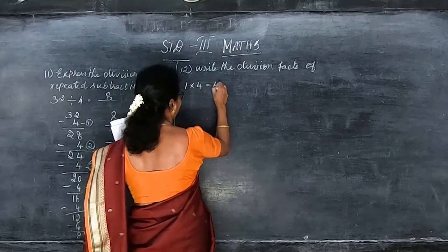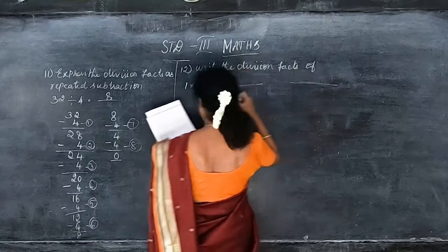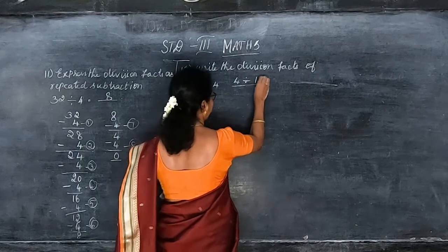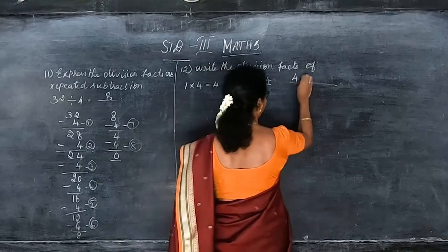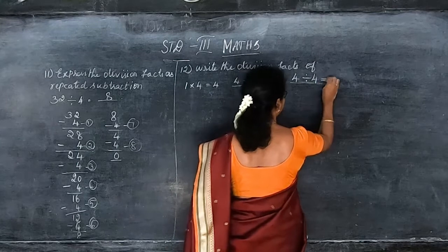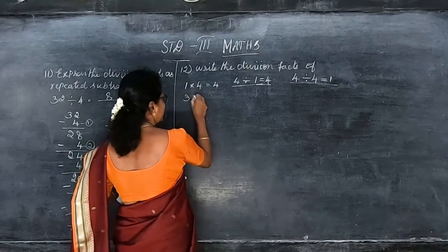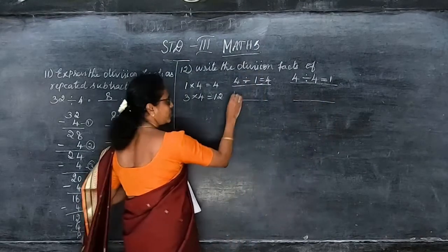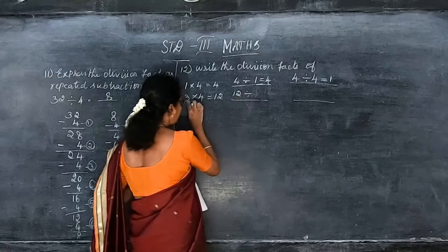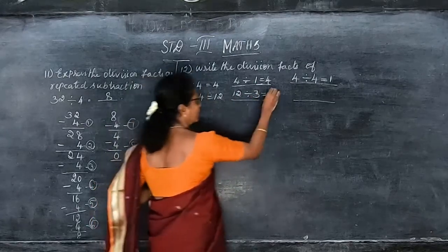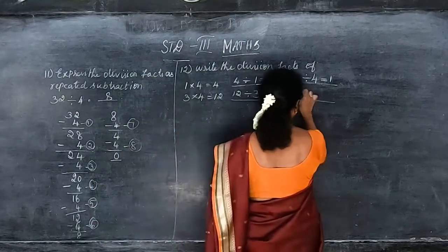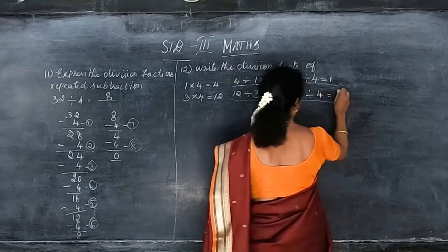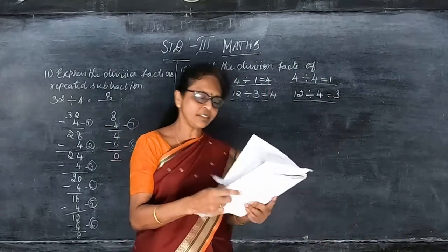Now write the division facts: 4 divided by 1 is equal to 4. Again 4 divided by 4 is equal to 1. Then the next one: 3 fours are 12, so 12 divided by 3 gives you 4. Then again same 12 — 12 divided by 4 gives you 3. So these are the 12 sums, from which I will ask any numbers.